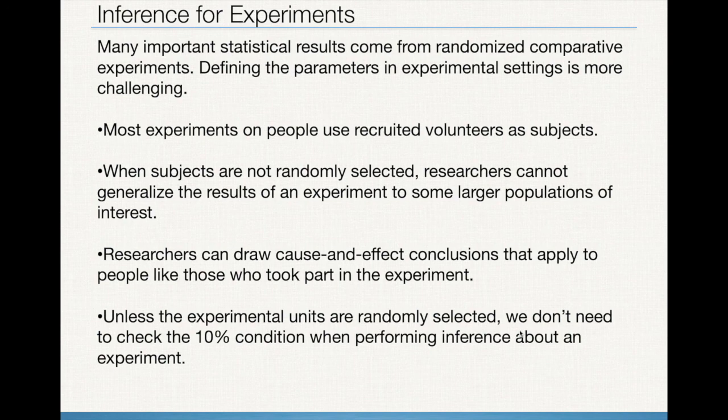The 10% condition is specifically about sampling from the population. The general idea: if we have volunteers who weren't randomly selected, we can have a cause-and-effect conclusion, but it can only be relative to those particular people. If we want a cause-and-effect conclusion for the population, you need to randomly select the participants and then you can make that conclusion. Alright folks, that's it for this one — next up we're going to be dealing with sample means. You all have a great day!